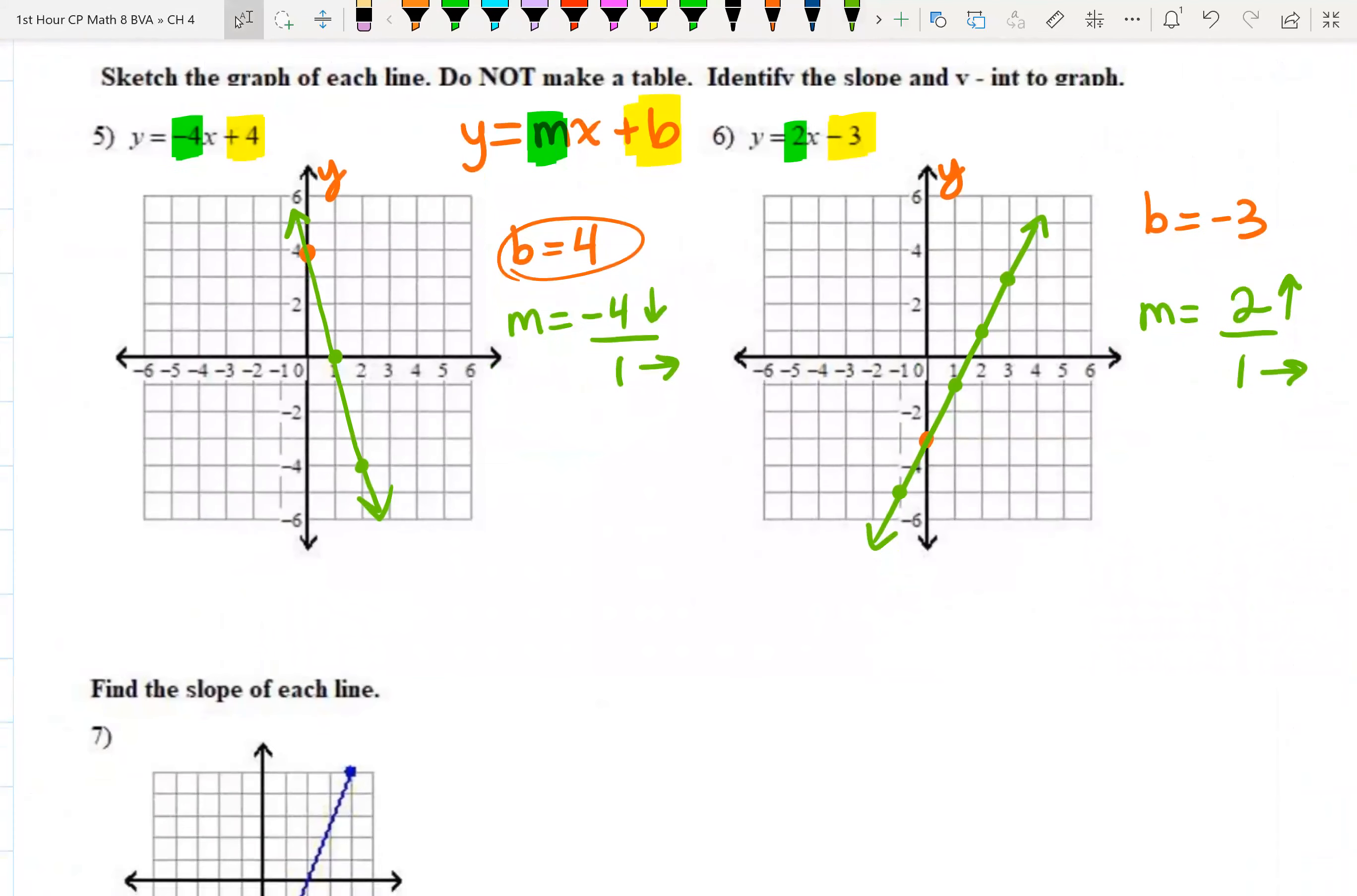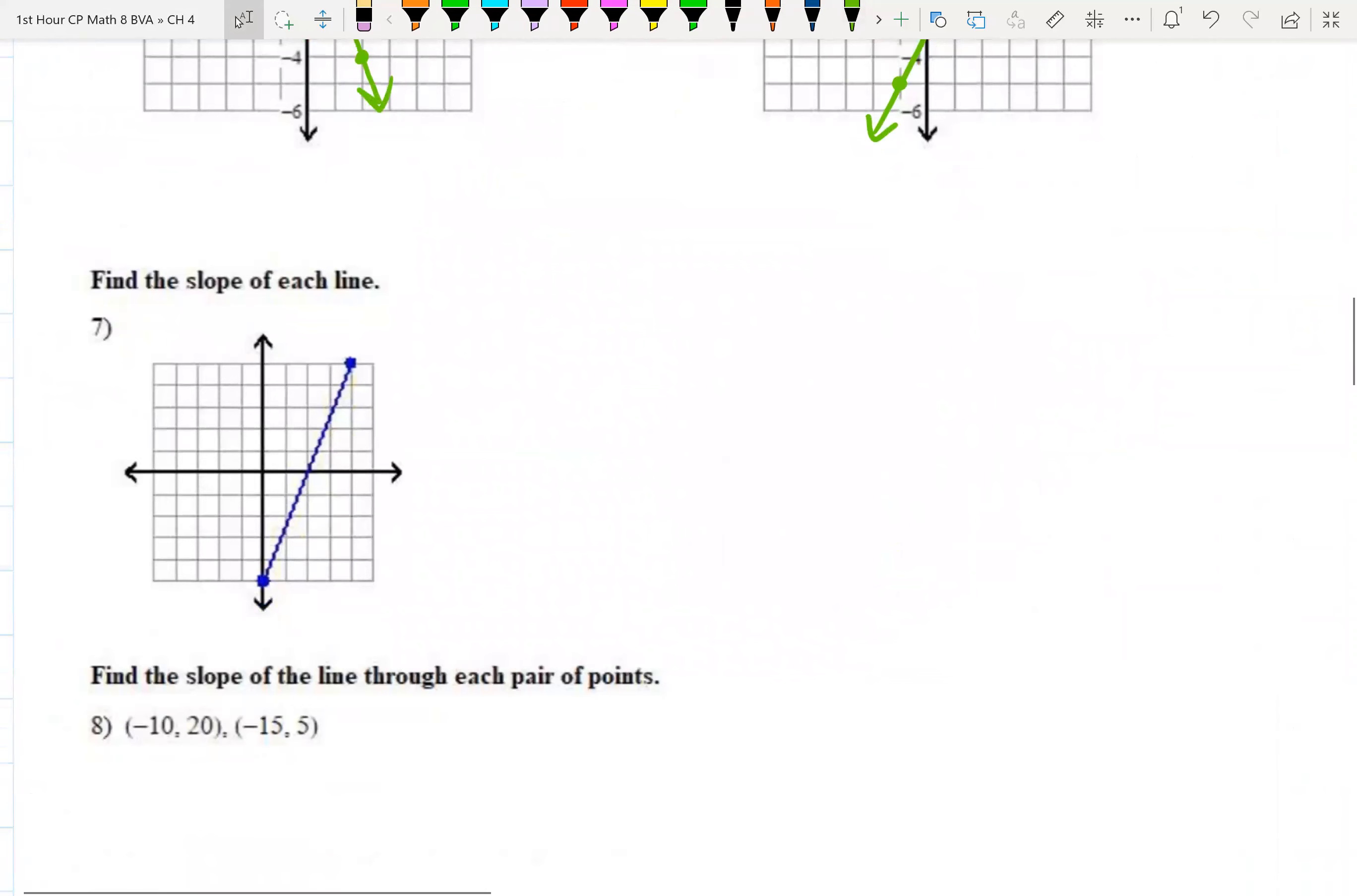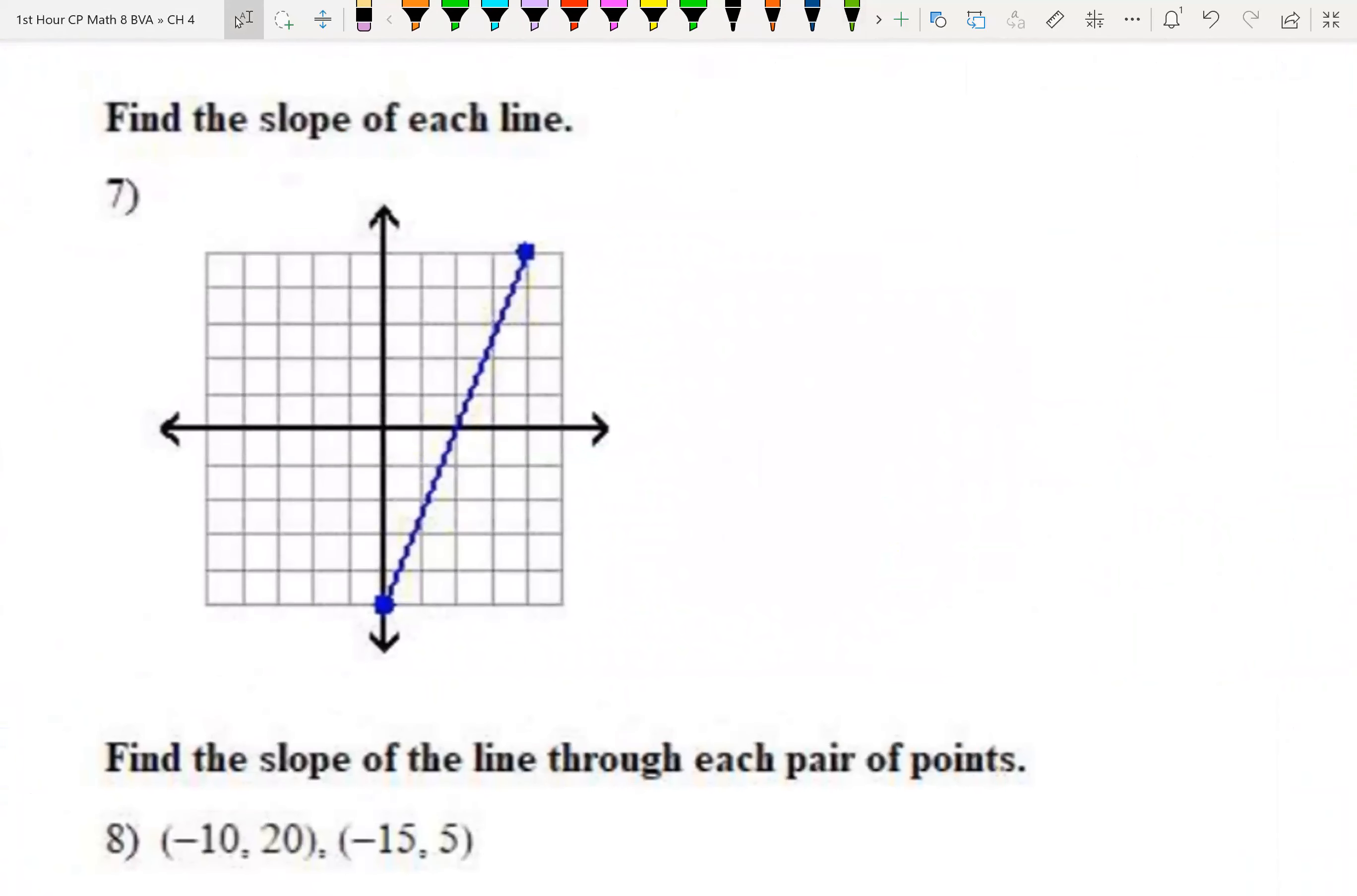So let's do number seven and eight. Let's jump down to number seven and find the slope of this line. Now slope is the m variable in y equals mx plus b, and slope is the same as rise over run. It has a lot of names, right? Change of y over change in x, vertical change over horizontal change, and slope even has its own equation.